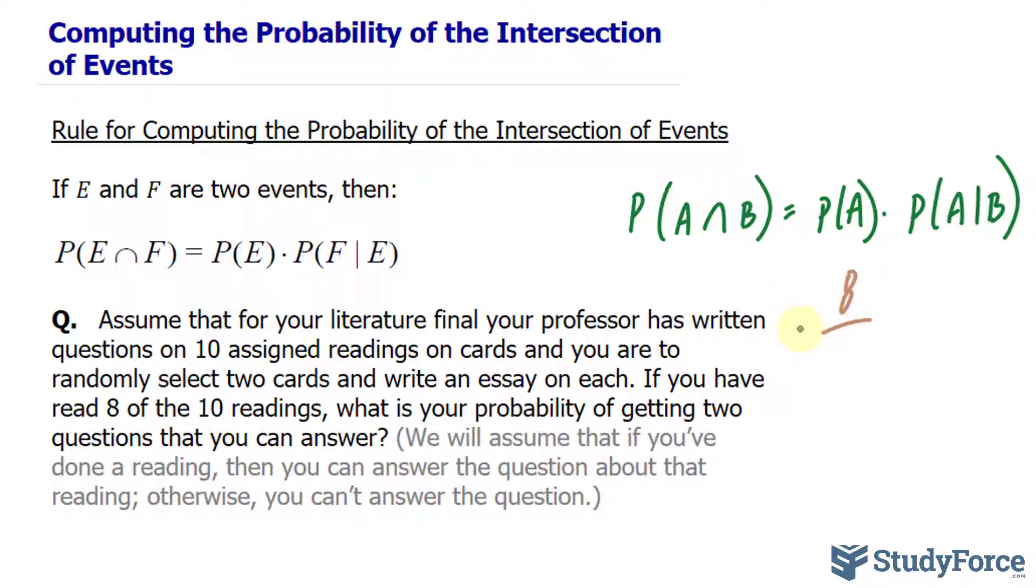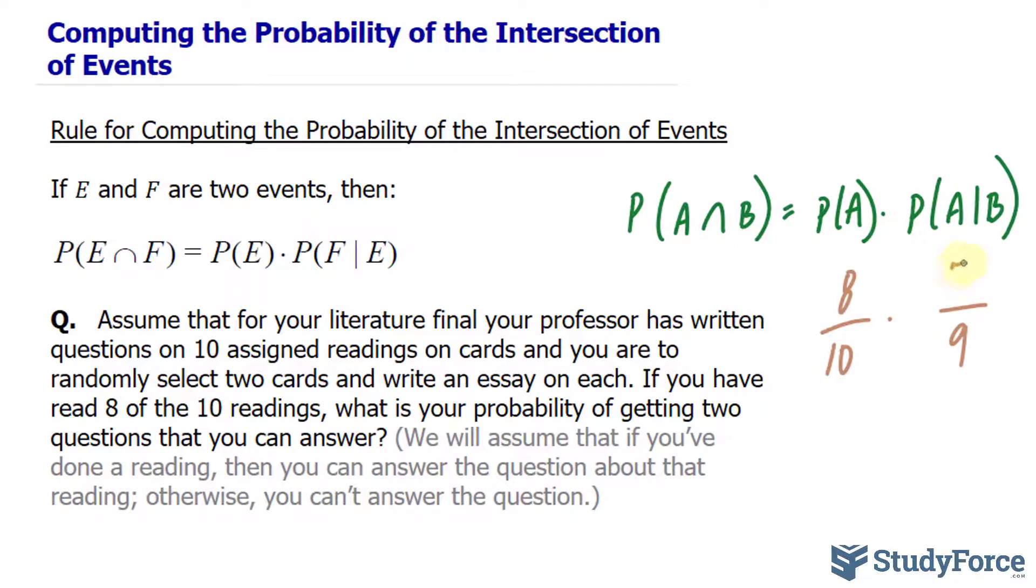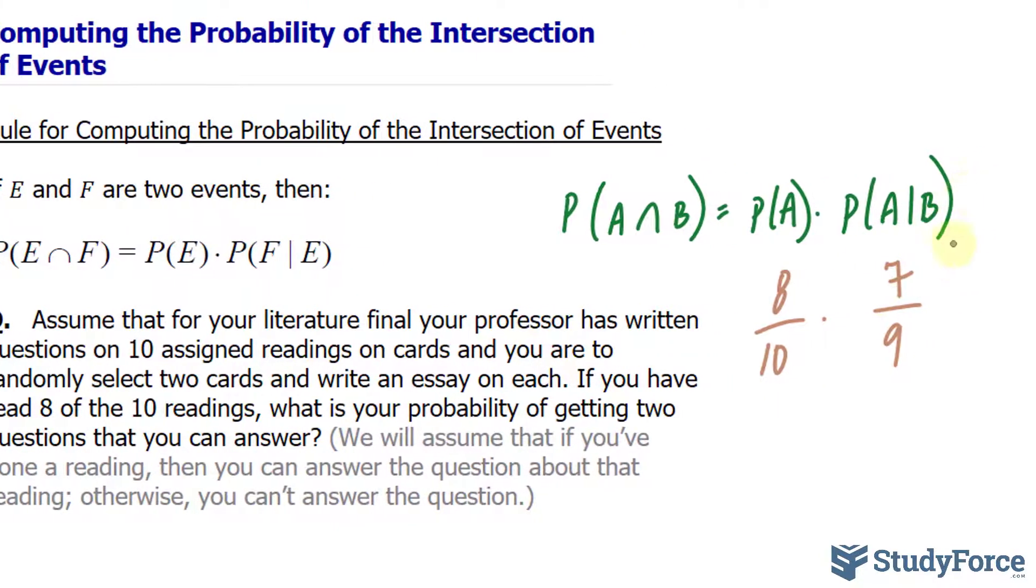Think about it. You know 8 of the questions. And we'll multiply that now to the conditional probability of B given A. Given that you've already selected a question, now there are 9 left, and you know 7 out of those 9. So this probability represents that factor.